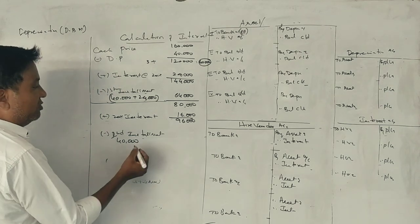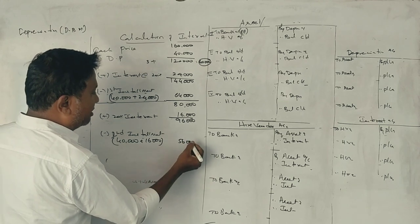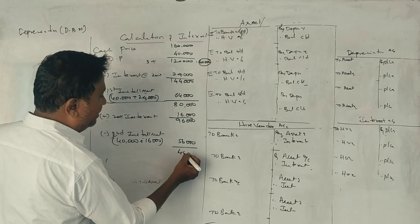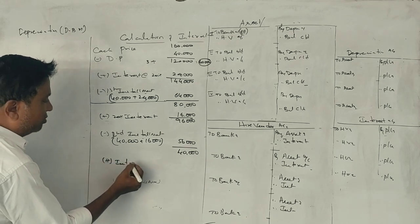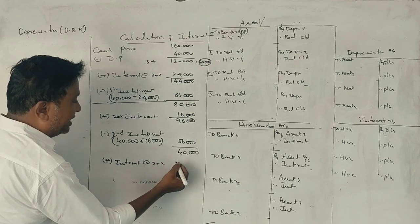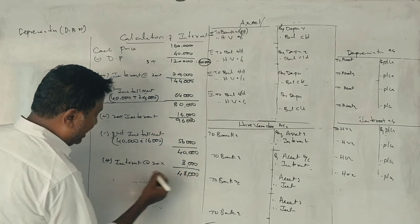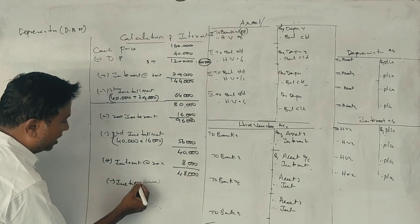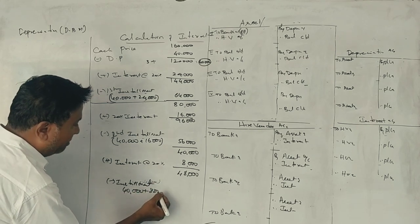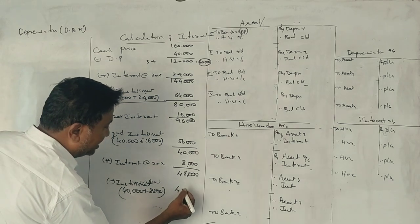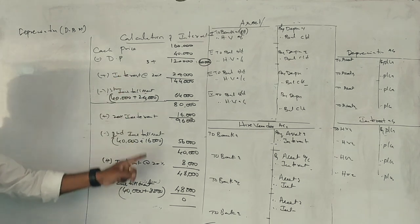The interest plus principal for first installment is 1 lakh 20 thousand, so interest is 20% which is 24,000. The installment is 40,000, so principal is 40,000 minus 24,000 which is 16,000. This is the interest calculation.